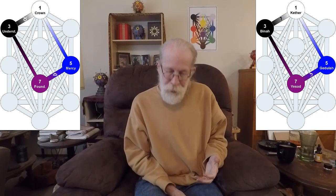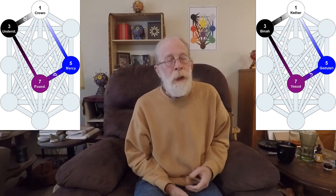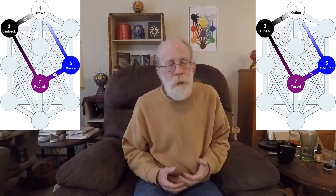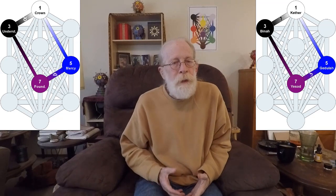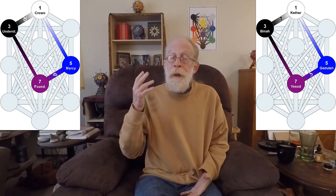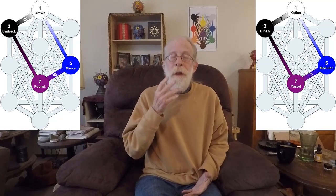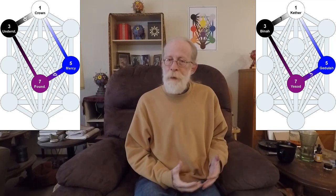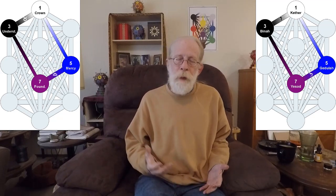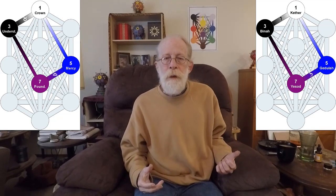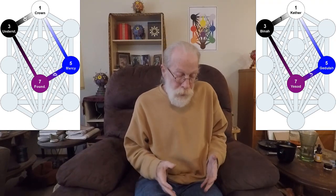The next gate is also a quadrangle, and it starts as before: Gedula down to Yesad, Yesad straight up to Binah, and then Binah to Kether, and Kether straight down to Gedula. And again, the important parts are that rise up to Binah and then descent into Gedula.